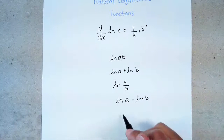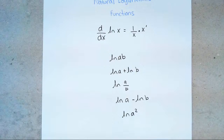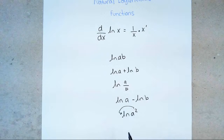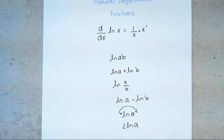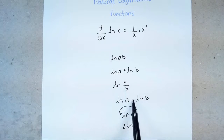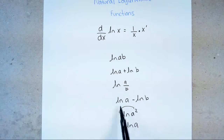The last rule is the power rule: ln(a²). Anytime your exponent belongs only to the variable, that exponent comes to the front — so it becomes 2·ln(a). To summarize: multiplication means addition, division means subtracting, and an exponent only on the variable comes to the front.